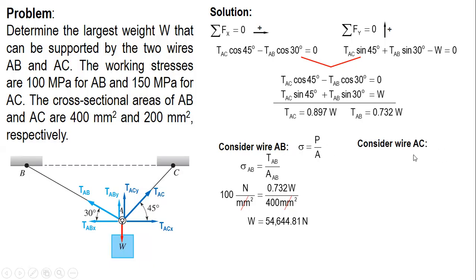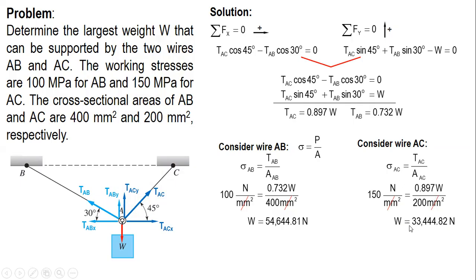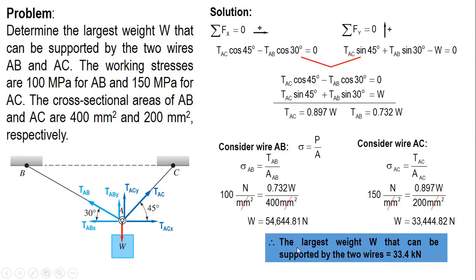Considering wire AC: the working stress is 150 MPa, the area is 200 mm², and the force in AC is 0.897W. Applying the same stress formula gives W = 33,444.82 N, which is the maximum weight wire AC can support. The largest allowable weight is the smallest of the two values — the weaker wire governs — so the answer is 33.4 kN.